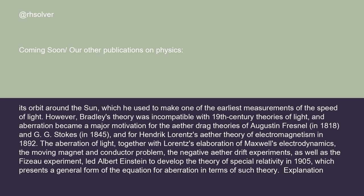However, Bradley's theory was incompatible with 19th-century theories of light, and aberration became a major motivation for the ether-drag theories of Augustine Fresnel in 1818 and G.G. Stokes in 1845, and for Hendrick Lorentz's ether theory of electromagnetism in 1892. The aberration of light, together with Lorentz's elaboration of Maxwell's electrodynamics, the moving magnet and conductor problem, the negative ether drift experiments, led Albert Einstein to develop the theory of special relativity in 1905, which presents a general form of the equation for aberration in terms of such theory.